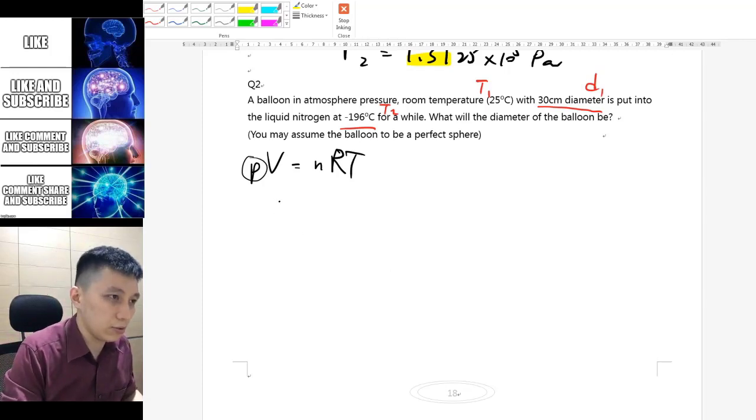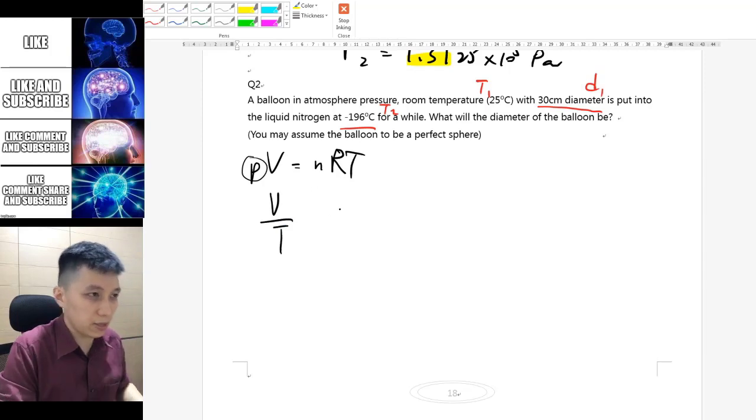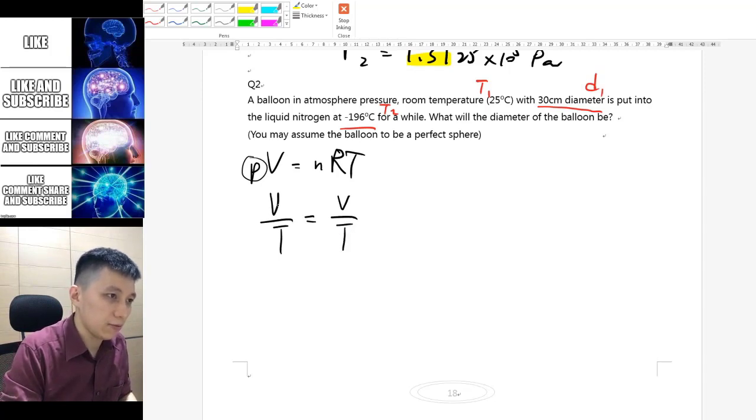What you can do is you should find V over T equal to nR over P, and so you should be able to construct the equation V1 over T1 equals to V2 over T2.